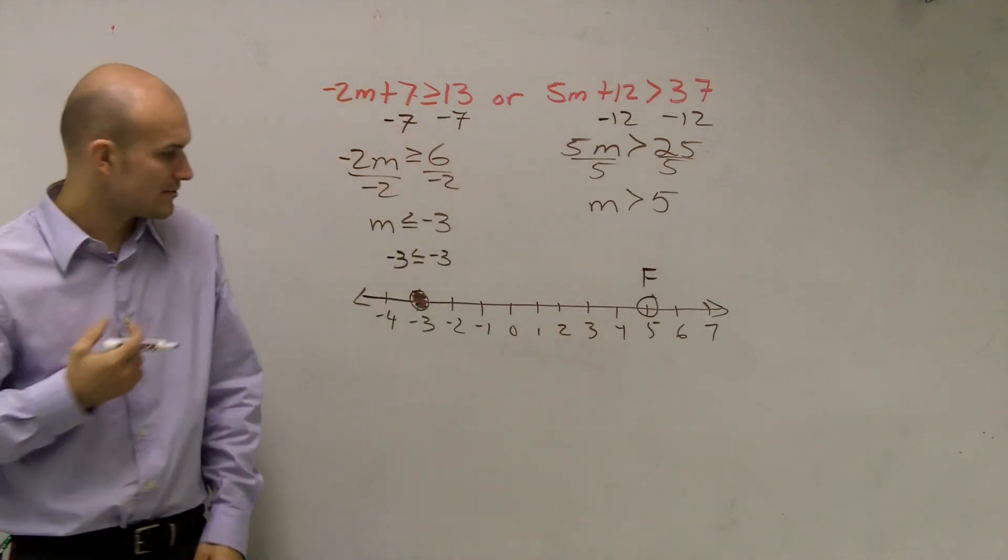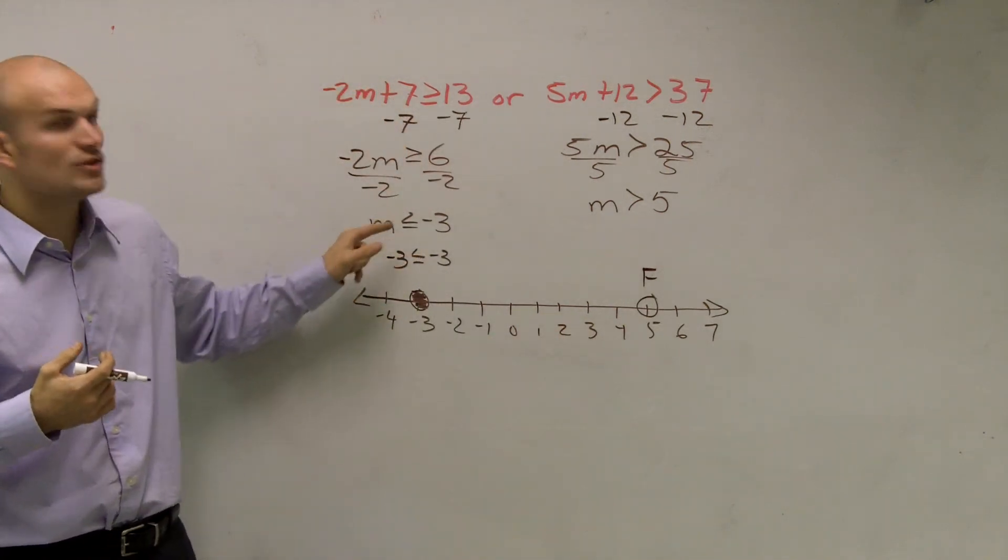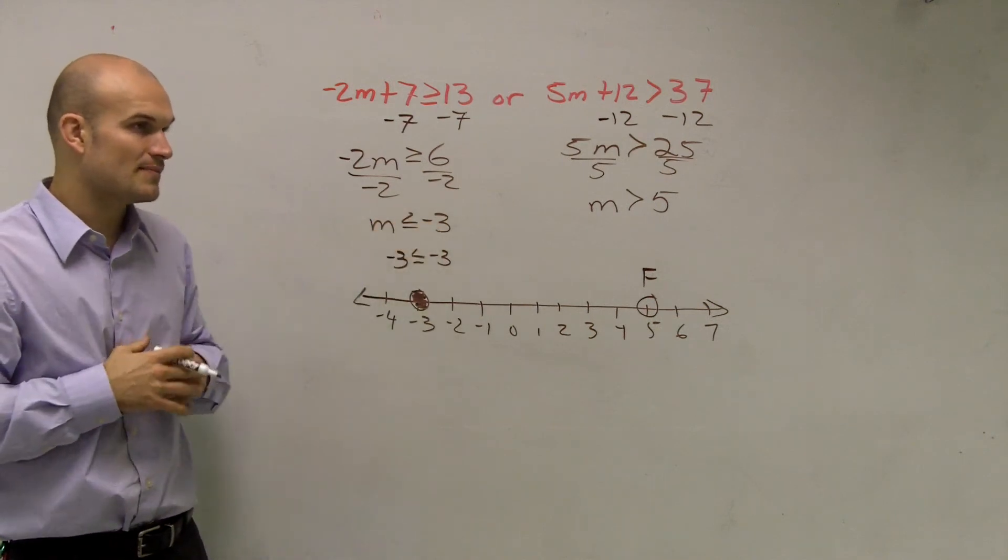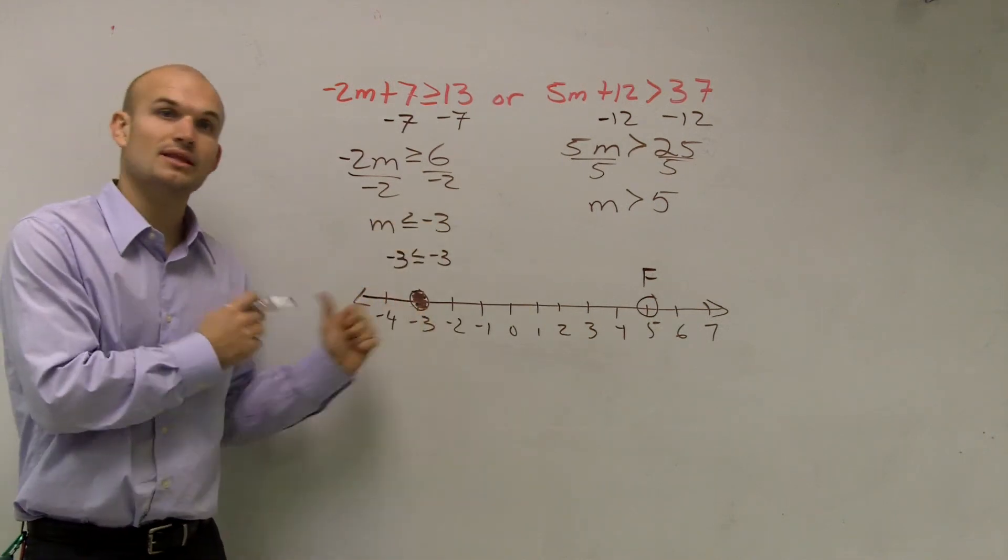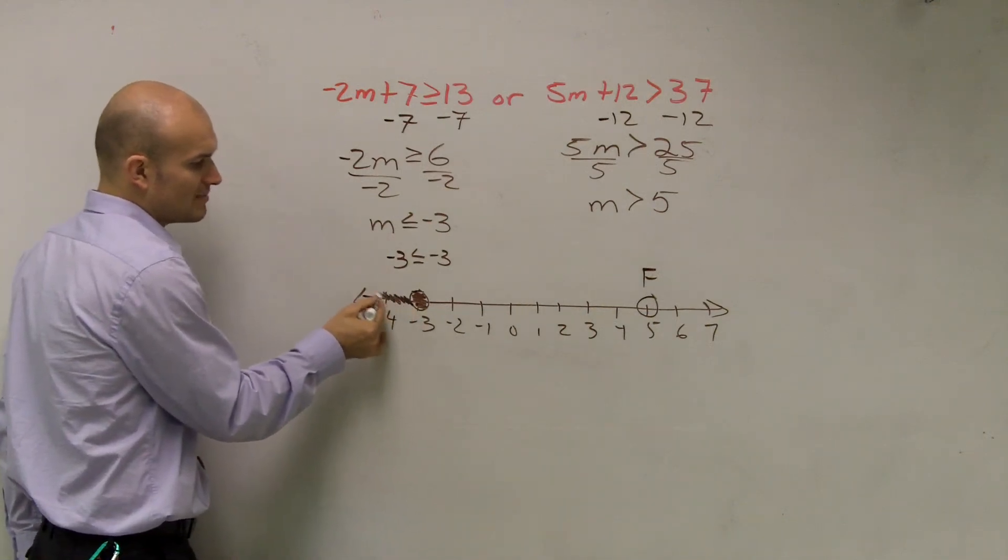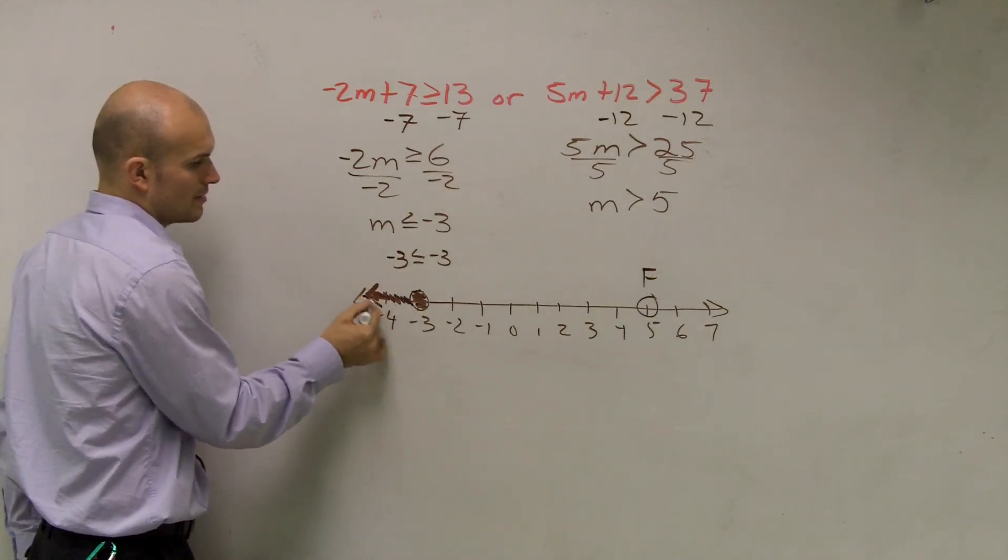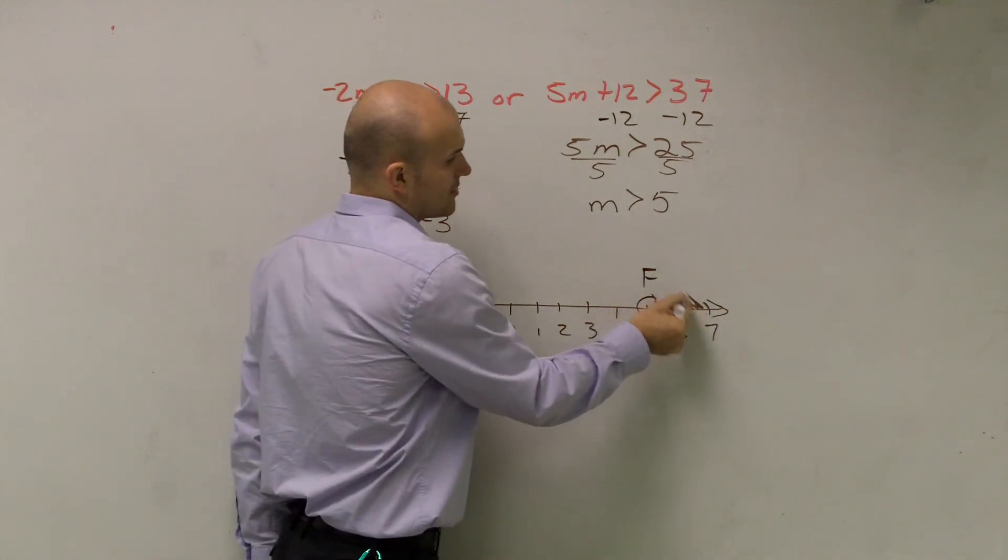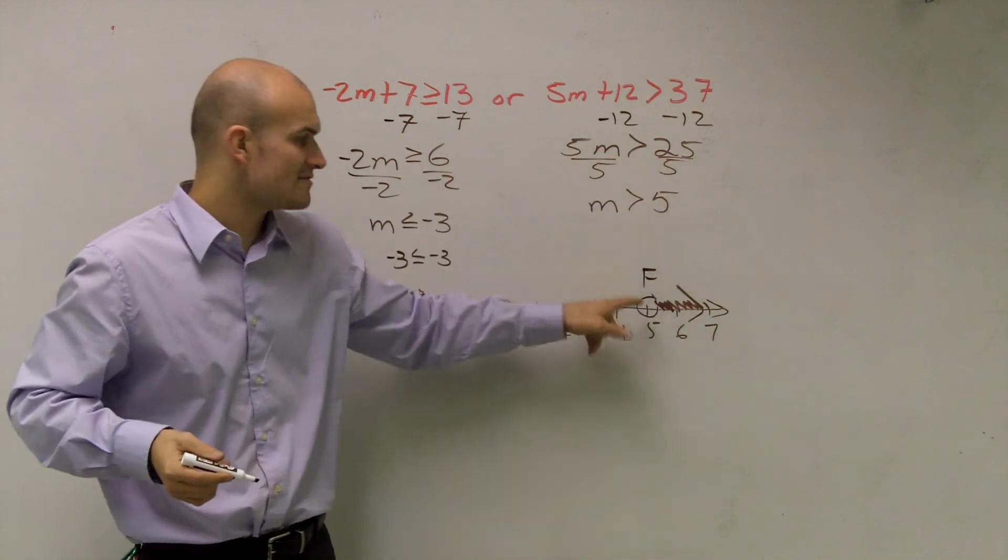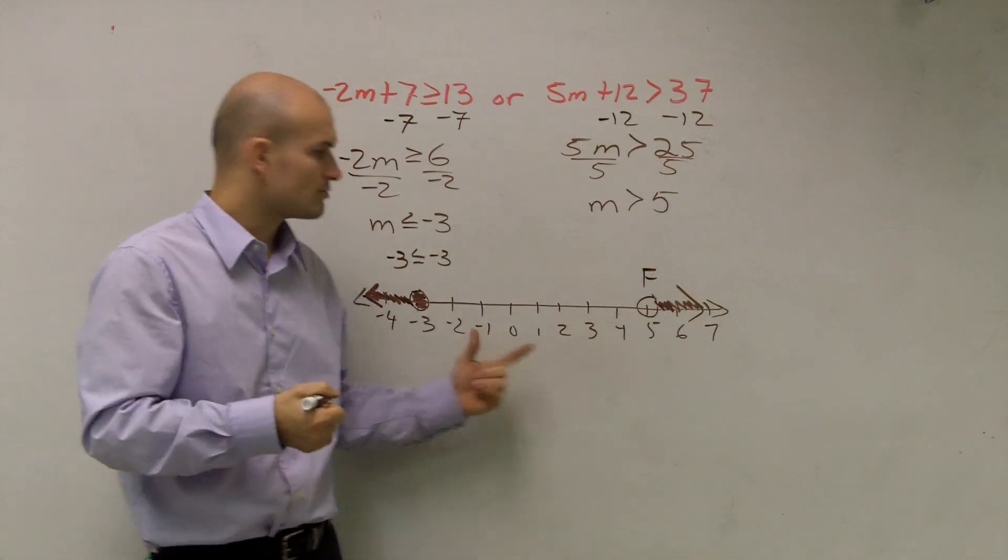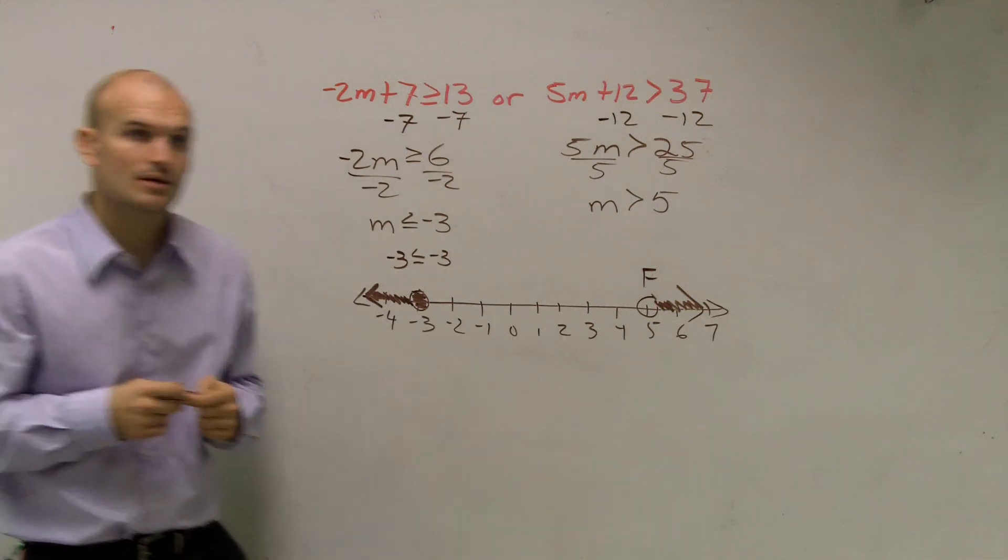So now, the last thing that we're going to look at is this represents all numbers that are less than or equal to negative 3. So that is going to represent numbers to the left. And you guys can notice that all numbers going to the left are less than. And then we graph to the right because this says all numbers that are greater than 5. Obviously, the numbers to the right are greater than the numbers to the left. So your compound inequality should look like that.